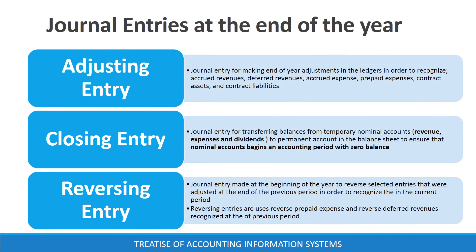At the end of an accounting period, there are three types of journal entries that are made in order to ensure that the financial reports comply with the reporting standard. These types of entries include adjusting entries, closing entries, and reversing entries. An adjusting entry is a journal entry for making end of year adjustments in order to recognize accrued revenues,